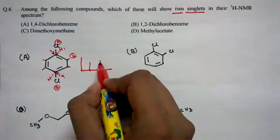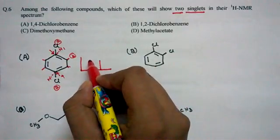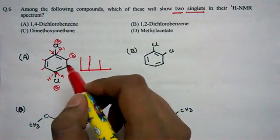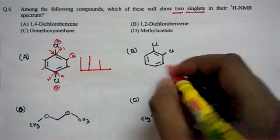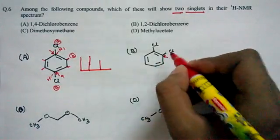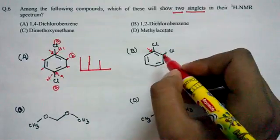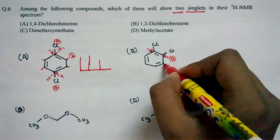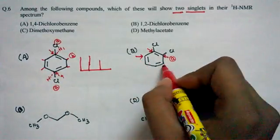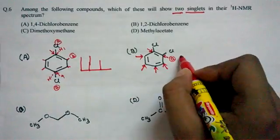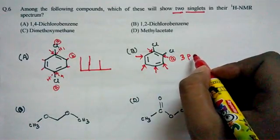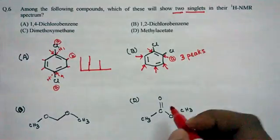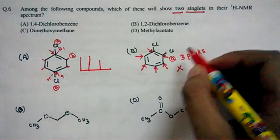For this compound we would get two peaks in its NMR spectrum. Now we have to judge whether these peaks are singlet, doublet, or otherwise. For this particular compound, the molecular environment of these two hydrogens is similar — one type of peak — and the molecular environment of these two hydrogens is also the same, giving another type. So total three peaks would be there, meaning three singlet peaks. This cannot be our option since we need exactly two peaks.